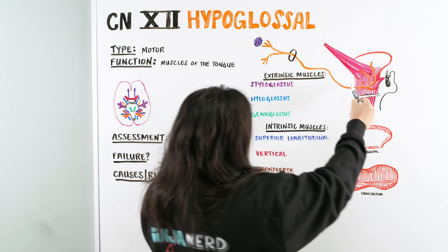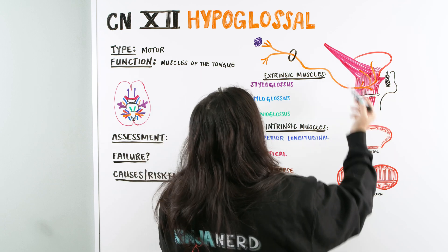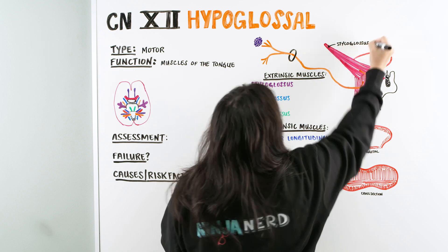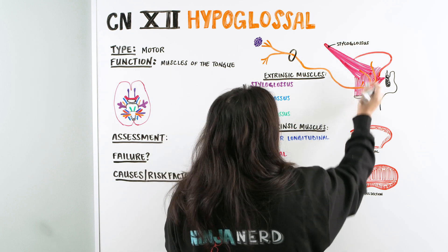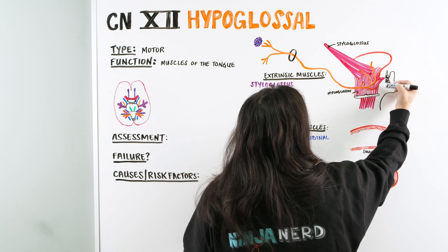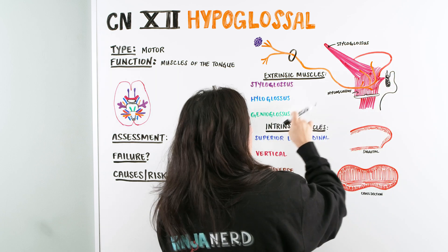So as the nerve comes down, it branches off, and it hits really three important muscles here that are not within the tongue. And that is the styloglossus, which is this one right here. We have the hyloglossus, which is this one under here. And then we have one in the front here, which you can kind of see, it's like this, right? It's pertaining right here, and that is called the genioglossus.